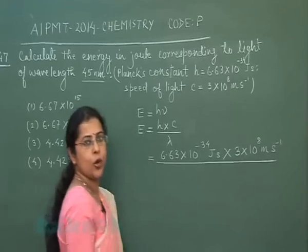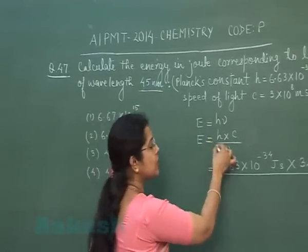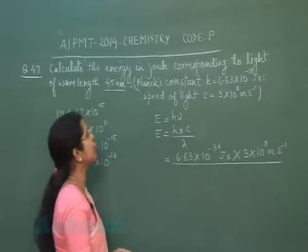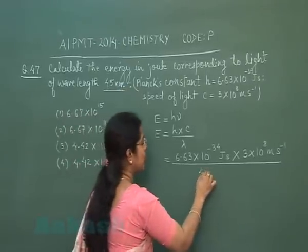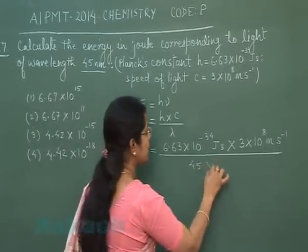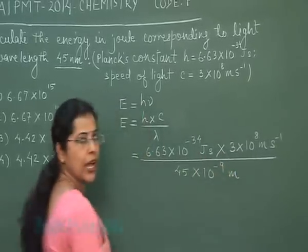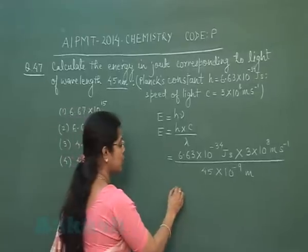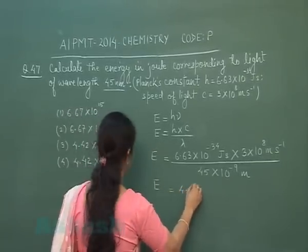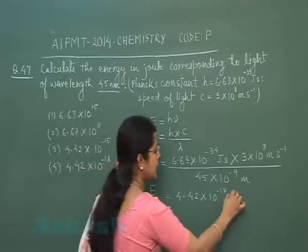In this question, wavelength is also given in nanometers. Since Planck's constant is given in standard units, we have to convert this wavelength into the standard unit of length, which is meter. So 45 nanometers can be written as 45×10⁻⁹ meters. When we solve this question, the value of energy of the photon comes out to be 4.42×10⁻¹⁸ joules.